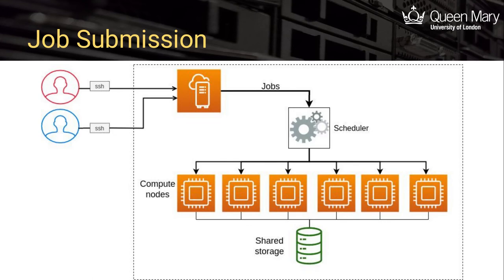Diagrammatically, this is what's happening. Users may log in from anywhere using a secure shell session from a terminal application to a front-end server. The user uses a command to send their job script to the scheduler. The scheduler adds the request to a queue and will run a job when resources are ready and there are no earlier jobs in the queue that can run first. Most small jobs will not spend very long in the queue, and many will run immediately.